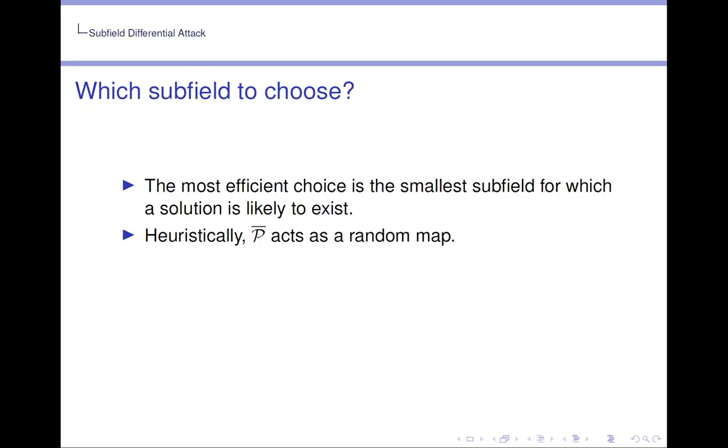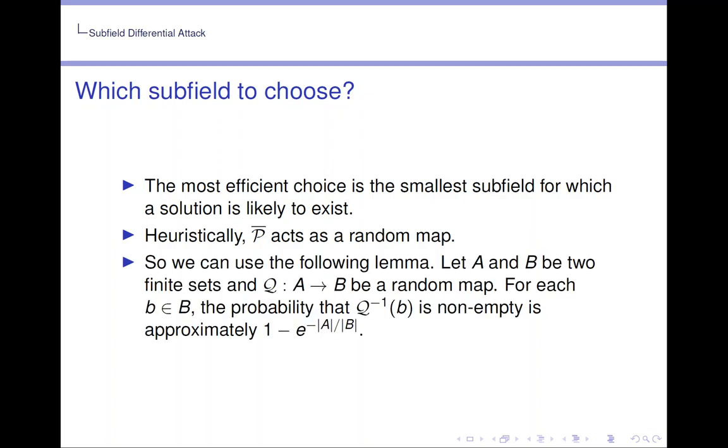Now the most efficient choice is the smallest subfield for which a solution is likely to exist. Heuristically, P̄ acts as a random map. So we can use the following lemma. Let A and B be two finite sets and Q, which takes A to B, be a random map. For each b in B, the probability that Q inverse of b is non-empty is approximately 1 minus e to the power of negative size of A divided by size of B.